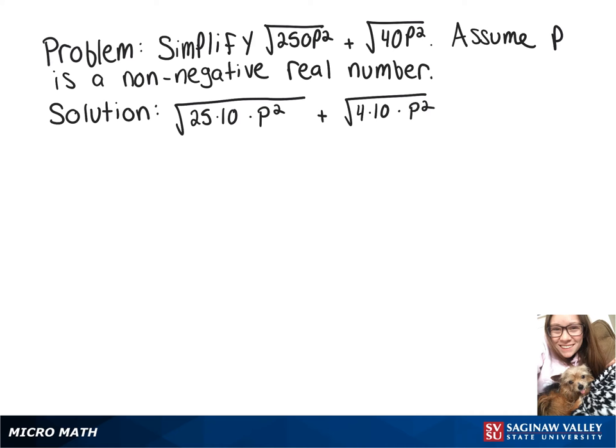Now, you know that the square root of 25 is 5, so we can take that out from underneath the radical. The square root of p squared is going to give us the absolute value of p, because p times p gives you p squared. Underneath the radical, you've still got the square root of 10.